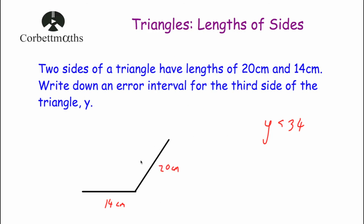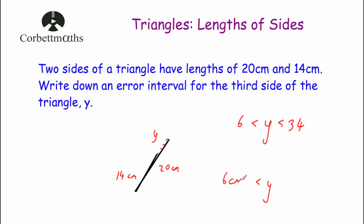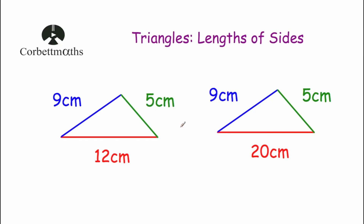Now let's consider the smallest possible length of y. As we make the angle between the two lines smaller and smaller, just before they lie on top of each other the third side would approach 20 − 14 = 6cm. So y must be greater than 6cm. Combining both: y is greater than 6cm but less than 34cm — and that's the error interval for the third side. This video has looked at the triangle inequality: any two sides must add together to be bigger than the third side, and we've seen which triangles are possible and which aren't.